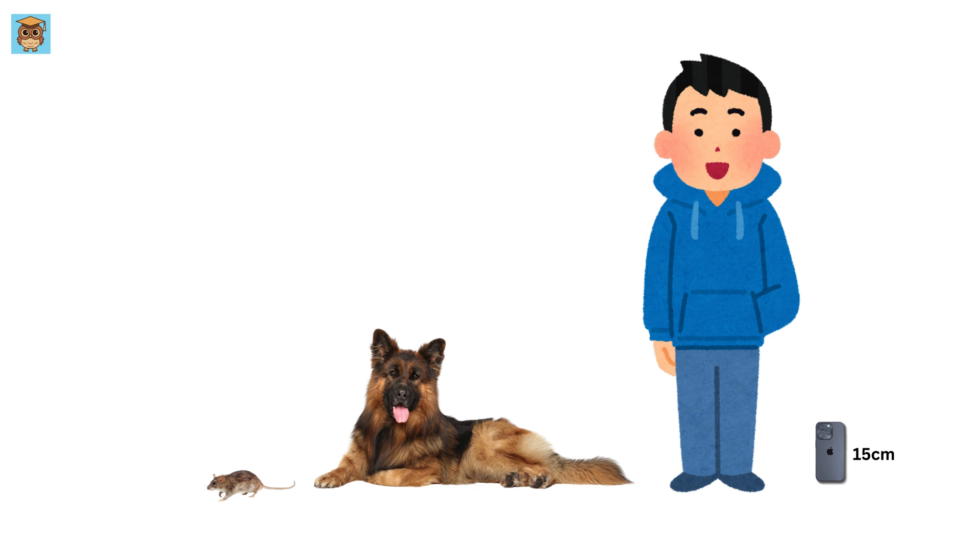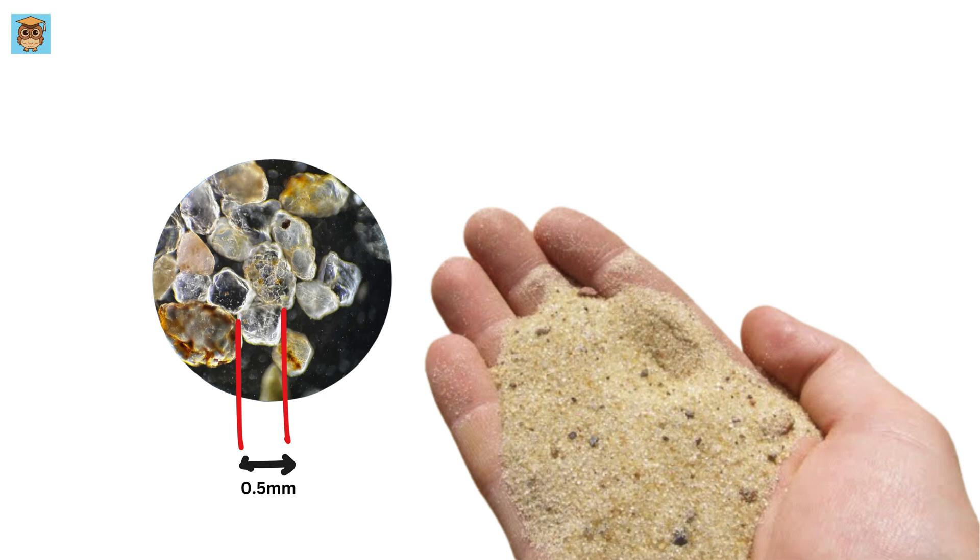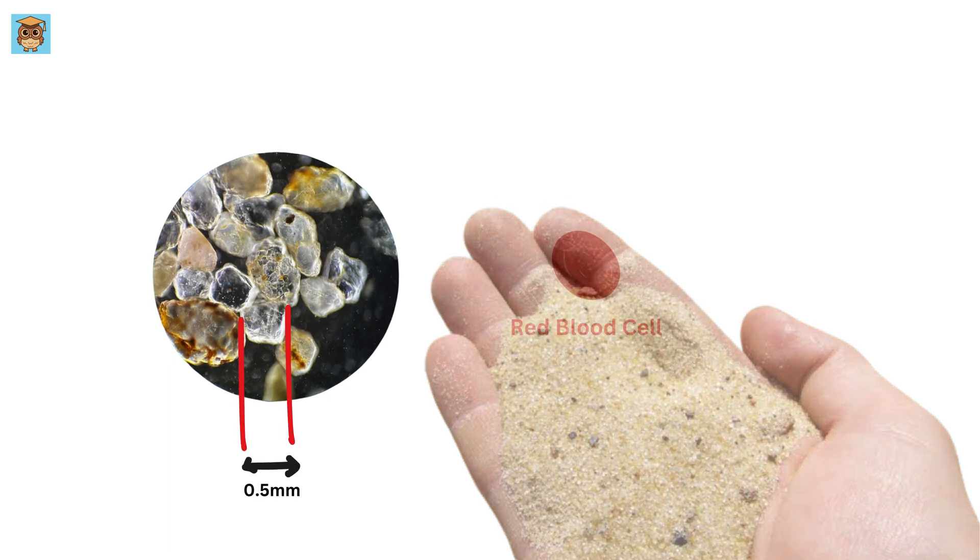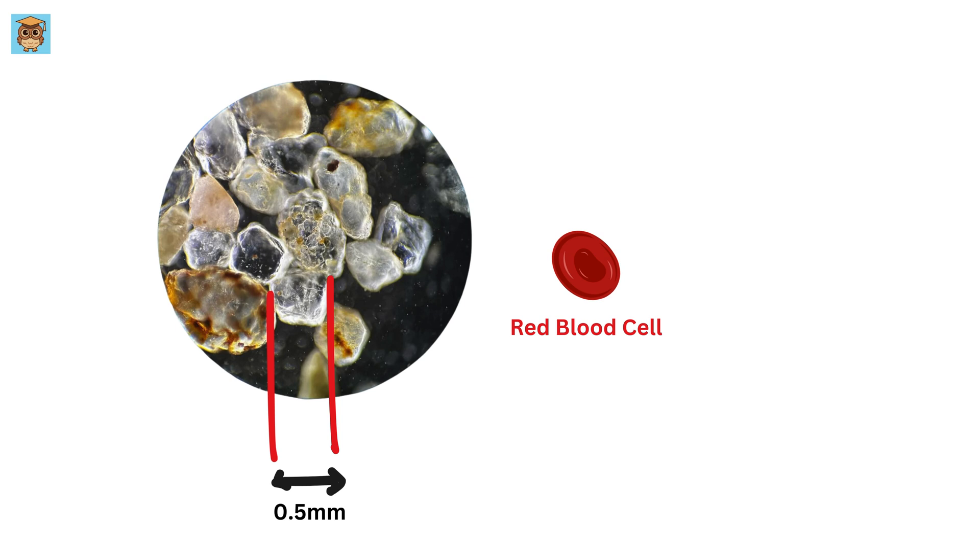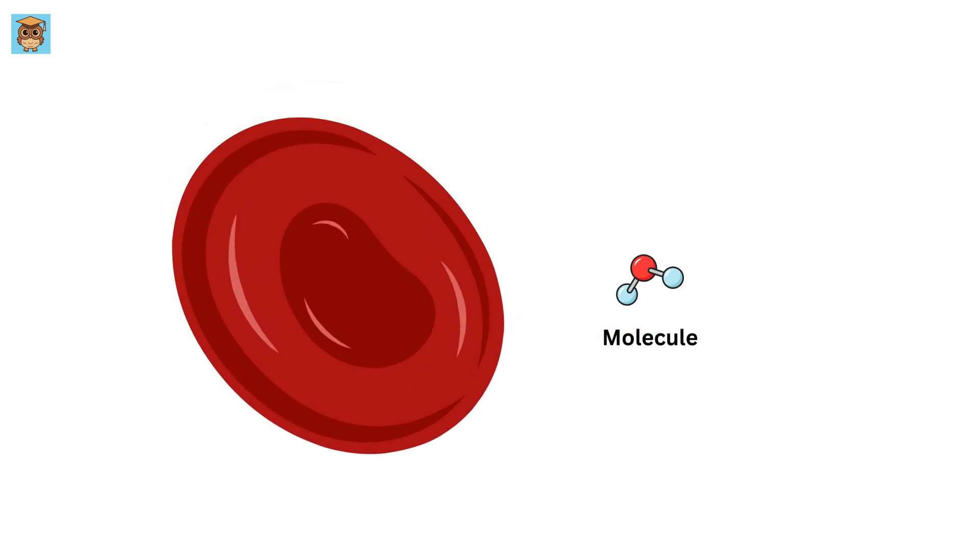And now, we go even tinier. A grain of sand. This little thing is only about half a millimeter across, meaning you could fit thousands of them just in the palm of your hand. That's tiny. But what about a red blood cell? They are 5,000 times smaller. And then what about the molecules making up that cell? A million times smaller than that. And we're not even close to the smallest scale.